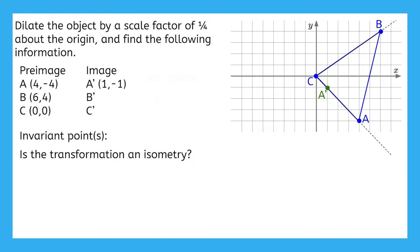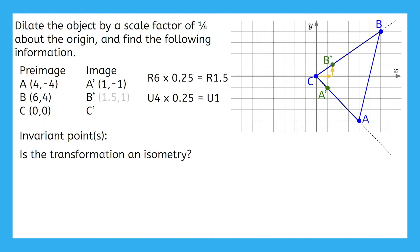Now that we've gotten through part of the problem, go ahead and make sure you're confident in your work for B prime and C prime before we check those answers. Let's see if your coordinates for B prime are correct. To get from the center of dilation to B, we move right 6 units and up 4 units. We can multiply each of those by the scale factor of 1/4, and we get right 1.5 units and up 1 unit. Starting back at the center of dilation, we move by these new distances and sketch in B prime.